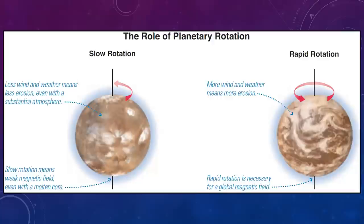And last but not least, rotation. We know rotation is a primary reason for magnetic fields and weather as well. We know most of our weather comes from the rotation of the Earth as well. Basically, slow rotation means less wind and weather and a weak magnetic field, but if you have a stronger rotation, you have more of all of those things.